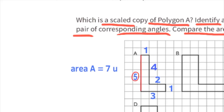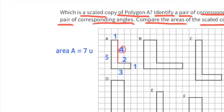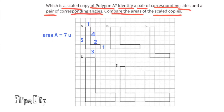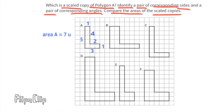Polygon A has a horizontal top side of 1 unit, a vertical side of 5 units, a horizontal bottom side of 3 units, a vertical bottom-right side of 1 unit, a horizontal side of 2 units, and a vertical side of 4 units. Since we're looking for a scaled copy, all angles must be the same and side lengths must increase or decrease proportionally. Polygon B can't be a scaled copy because some side lengths doubled while others didn't increase at all.